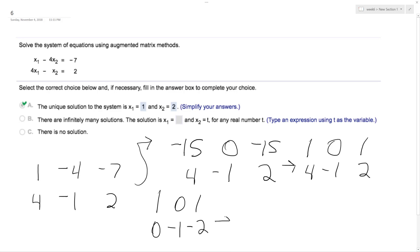And then multiply the bottom row by negative 2, I end up with 1, 0, 1, 0, 1, 2.